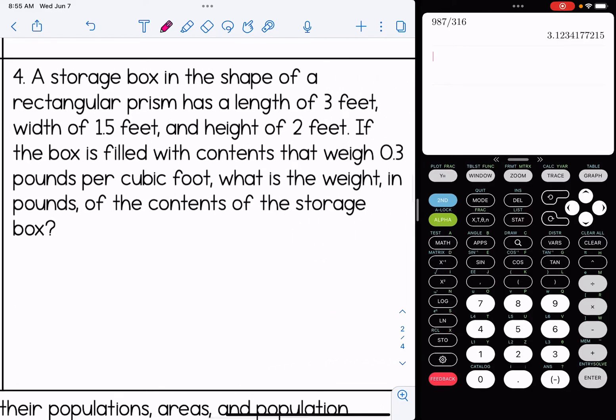Number four: a storage box in the shape of a rectangular prism has a length of three feet, width of 1.5 feet, and a height of two. If the box is filled with contents that weigh 0.3 pounds per cubic foot, what is the weight in pounds of the contents of the storage box? A common mistake I see on questions like this is that we think the 0.3 is the mass. The reason people might think that is because we see the word weigh right next to it. But if we keep reading, the unit is pounds per cubic foot. So this is really our density because we can tell that based upon the unit. The other reason I can tell it's not the weight or the mass is because the question actually asks us for it in the end. So just be mindful of that.